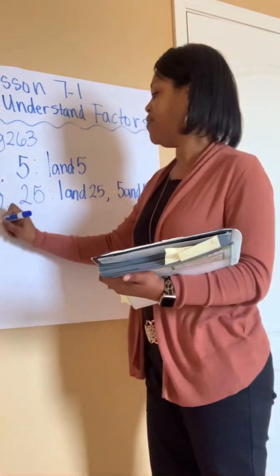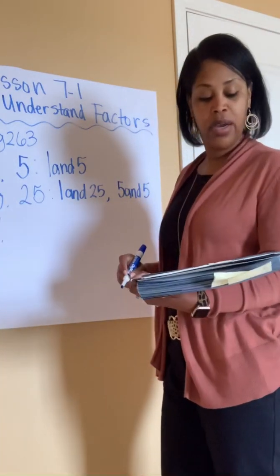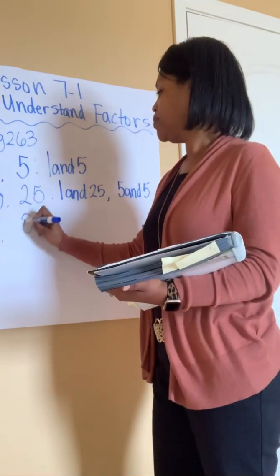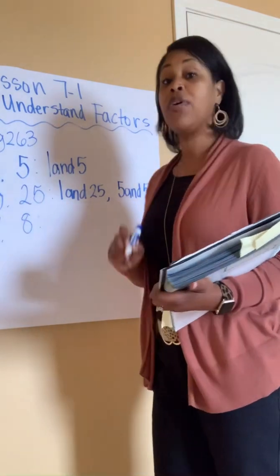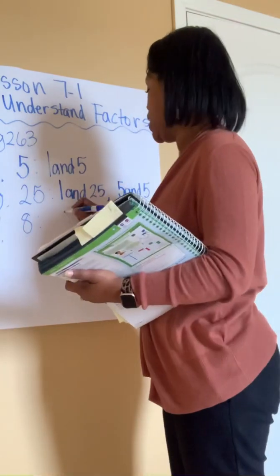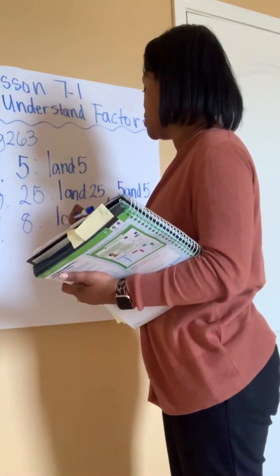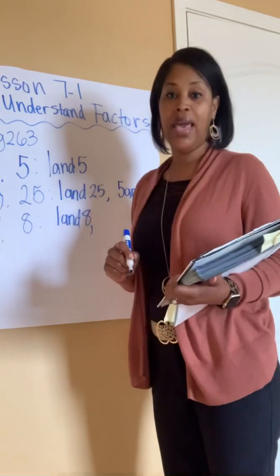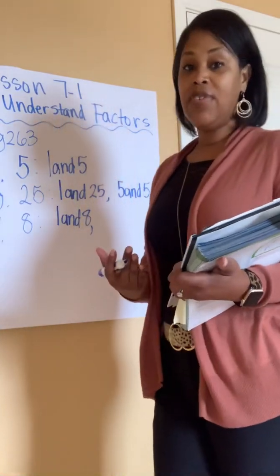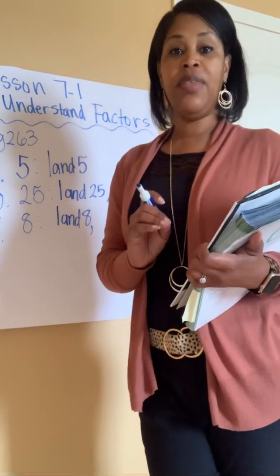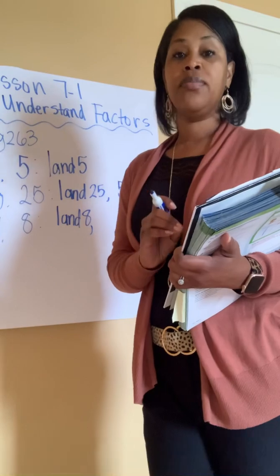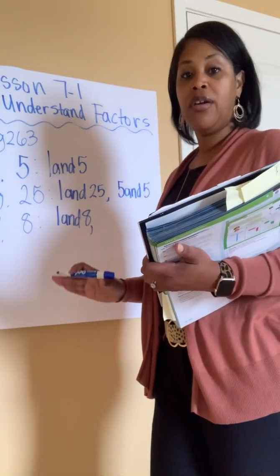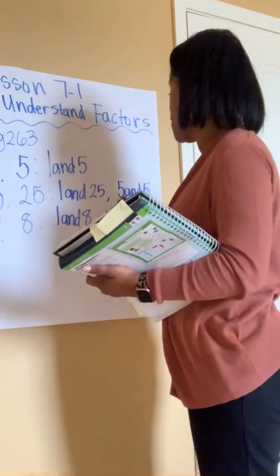Let's look at number 11, factor pairs for 8. I'm always going to start with 1, so 1 and 8, or 1 times 8 will give me 8. Since 8 is an even number, I know that 2 times something is 8. 2 times 4 equals 8. So a factor pair for 8 will be 2 and 4.